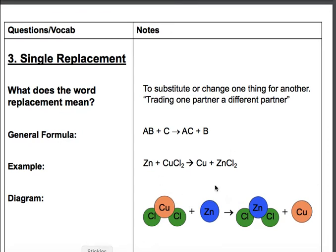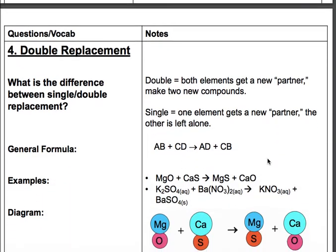And then if you look at the picture, same deal, right? You see the copper and the chlorines are kind of connected to each other and zinc is alone. And because zinc is actually a stronger element, and we're going to talk about this later, but because zinc is a stronger element, it's able to actually boot copper out of its little place here with the chlorines, and copper ends up being alone and zinc actually bonds with chlorine.